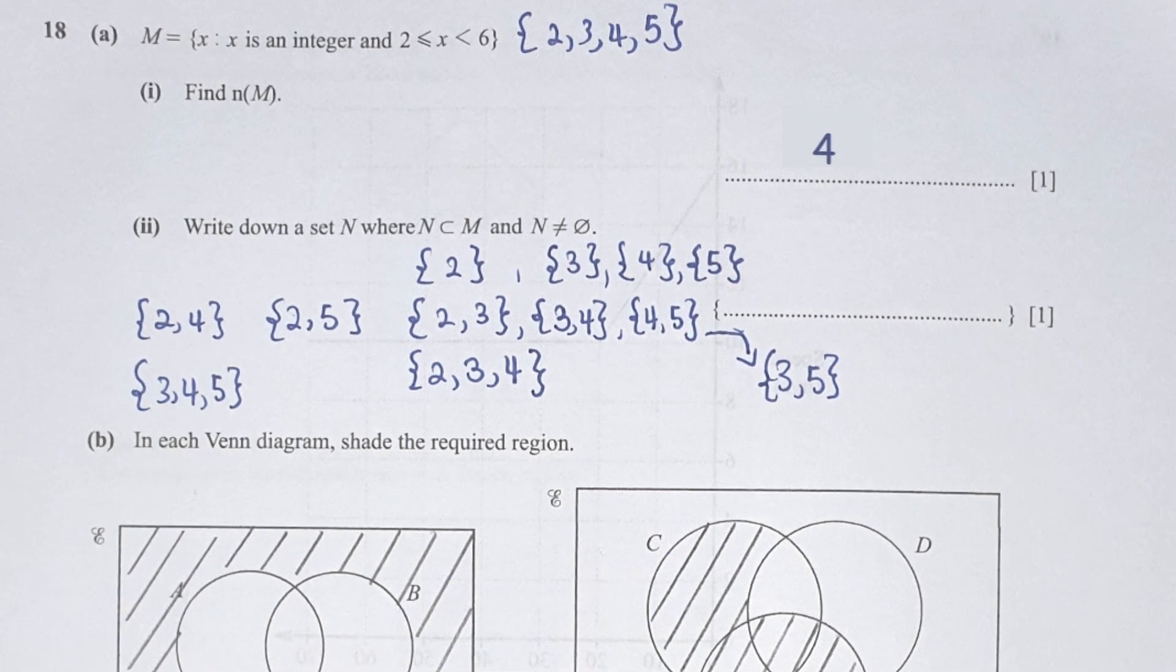For question 18, number of elements in M should be 2, 3, 4, 5, which is a total of 4. Write down a set where set N is a subset of M. It can be any of the combination that are listed over there, but they don't include the entire set, which is 2, 3, 4, 5, else it would be qualified as a proper subset instead.